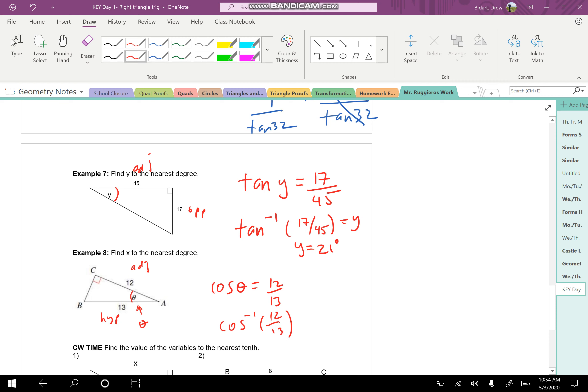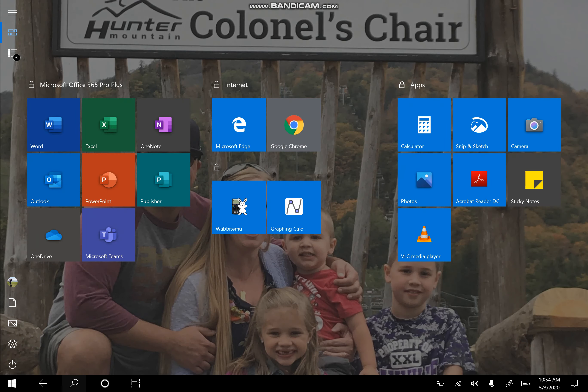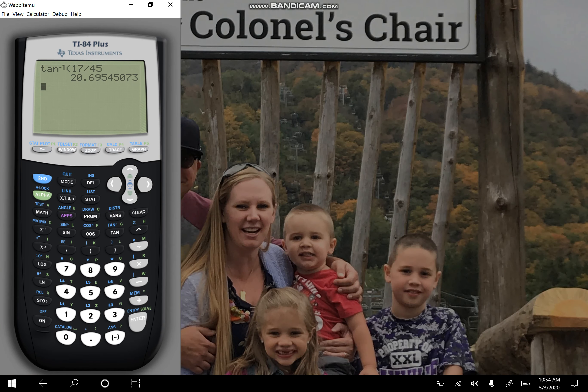Look here. This time, this little symbol here is called theta. It's like a zero with a line through it. So this time, 13 is the hypotenuse. The 12 is the adjacent. So that should be cosine. So we write that as the cosine of theta is equal to the adjacent over the hypotenuse. So since I'm finding the angle.